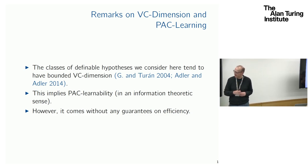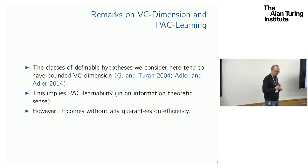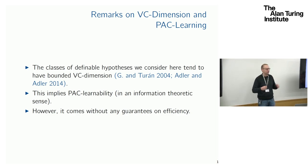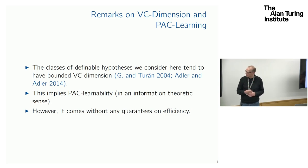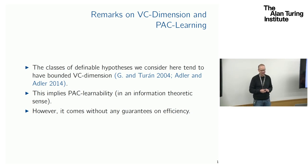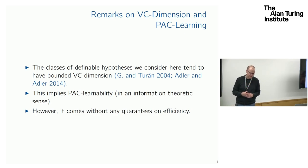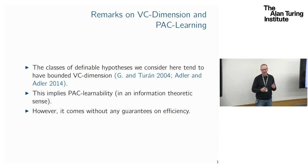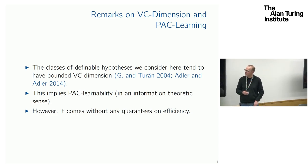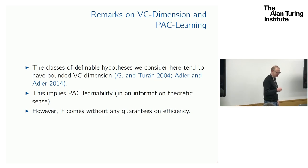The bounded VC dimension has been known for quite a while — some of the results are just old results from mathematical logic and model theory. For example, if the background structure is the reals, the fact that first-order definable predicates have bounded VC dimension goes back to work of Tarski, and then certainly Seidenberg from the early 1970s. For other classes of finite structures, it's more recent results.